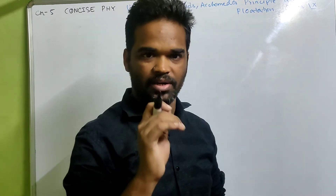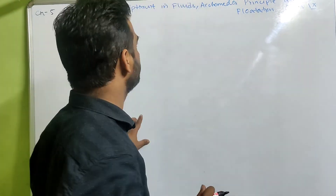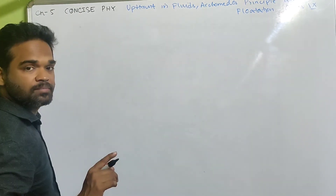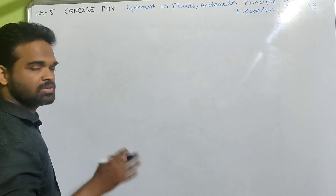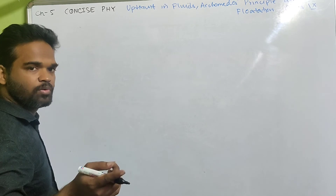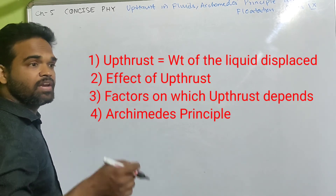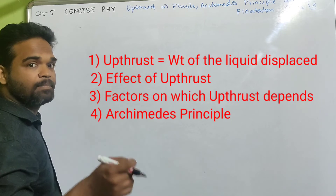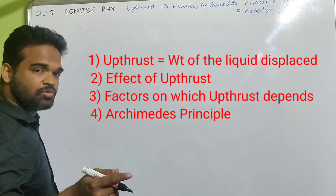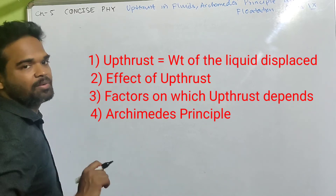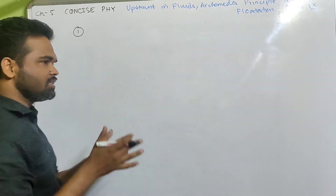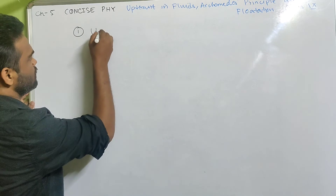Hi kids, in this video we'll discuss class 9 physics chapter 5 - uptrust in fluids, Archimedes' principle, and flotation. For the previous video you can click on the I button or see the description box. In this video we'll see the mathematical proof that uptrust is equal to the weight of the liquid displaced by the submerged part of the body, the effect of uptrust, the factors on which uptrust depends, and Archimedes' principle.